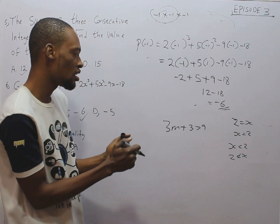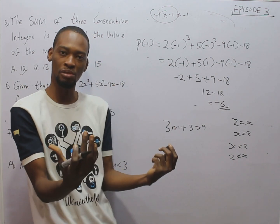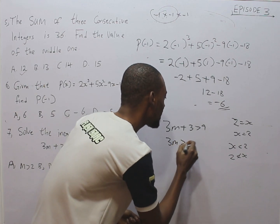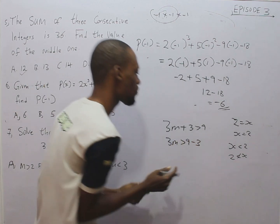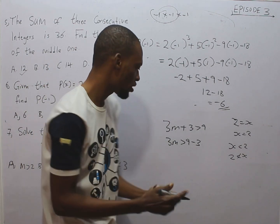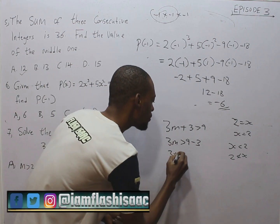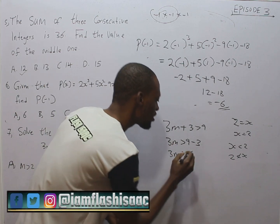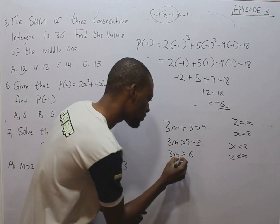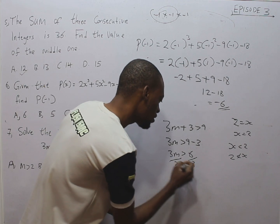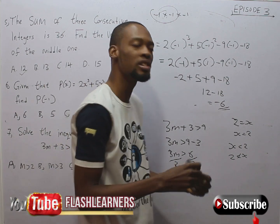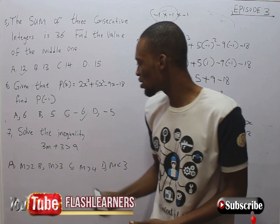So, how do we do this? Just like equations, we collect like terms to have 3m is greater than 9 minus 3. 3 moves to the other side of the inequality to give you minus 3. So, 3m is greater than 6 because 9 minus 3 is 6. Dividing both sides by 3, 3 cancels 3. m is greater than 2. So, m greater than 2 is the solution to this inequality.